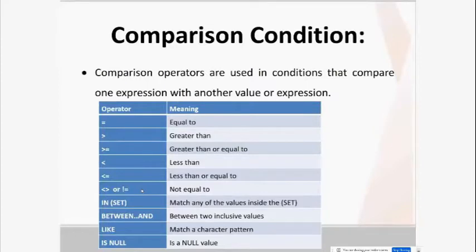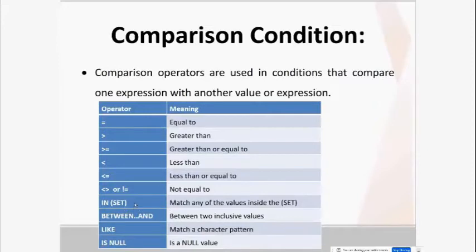Operators we haven't used yet include IN, BETWEEN, and LIKE. LIKE is used to match a character pattern. The IN operator matches any of the values inside a specified set. The BETWEEN operator works with a range of inclusive values — for example, BETWEEN 10 AND 15 includes 10, 11, 12, 13, 14, and 15.